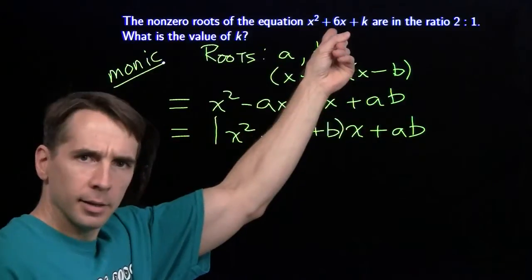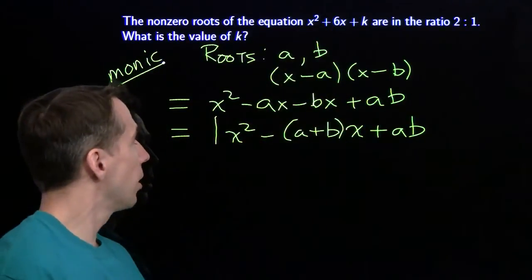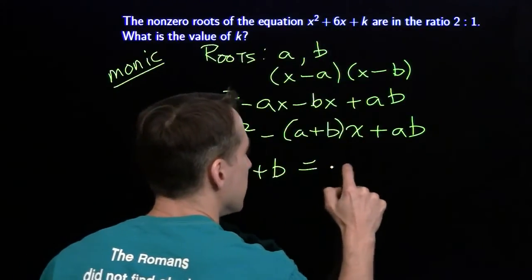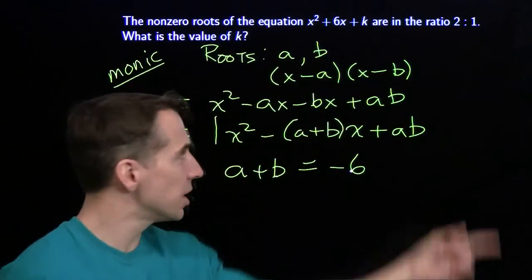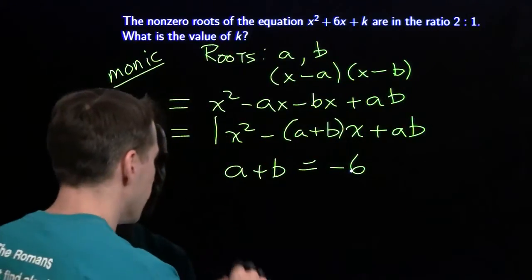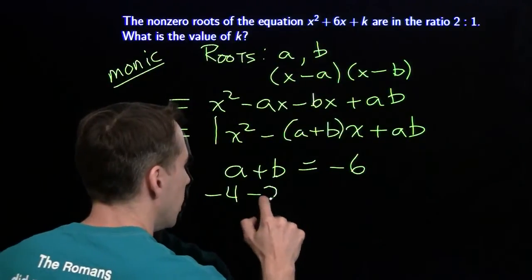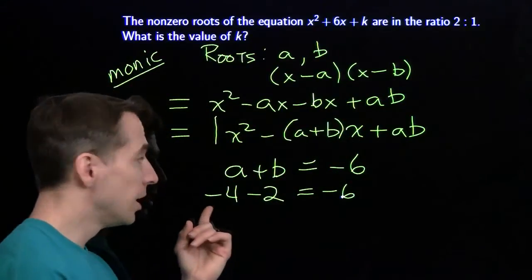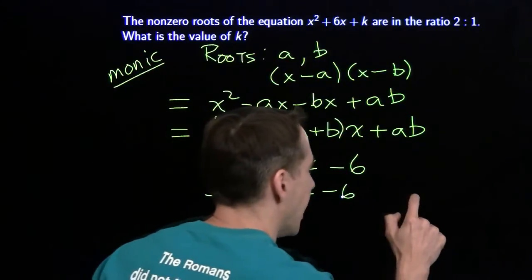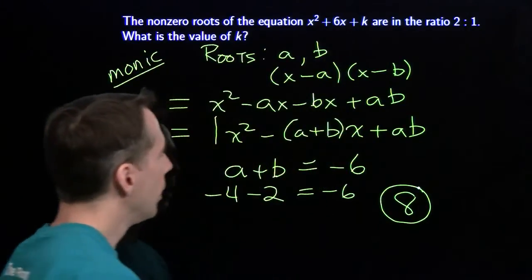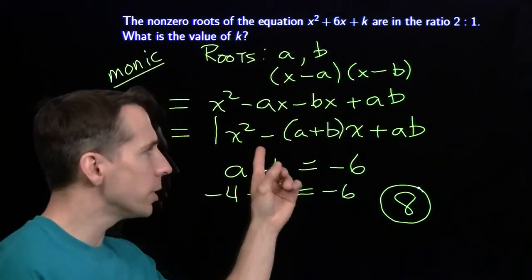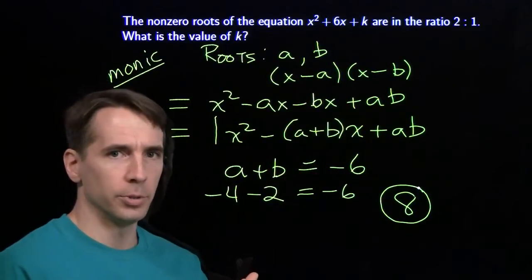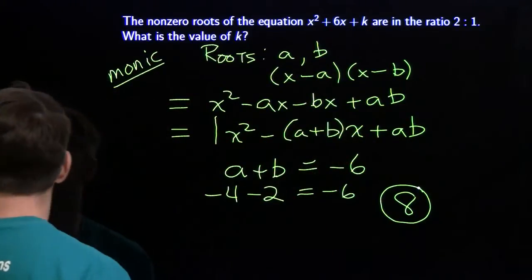Now let's use that here. The coefficient of x is 6, and that is the opposite of the sum of the roots, so the sum of the roots is negative 6. We're looking for two numbers that sum to negative 6 and are in ratio 2 to 1 — that gives us negative 2 and negative 4. Our constant term is the product of the roots: negative 4 times negative 2 gives us 8. So k equals 8, and now we understand how the coefficients encode information about the roots.